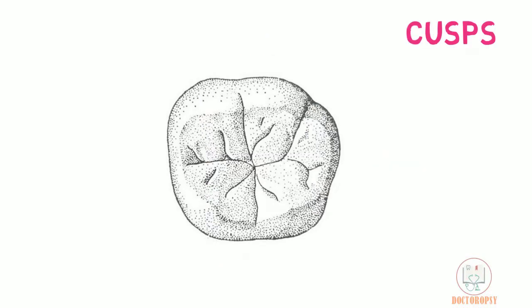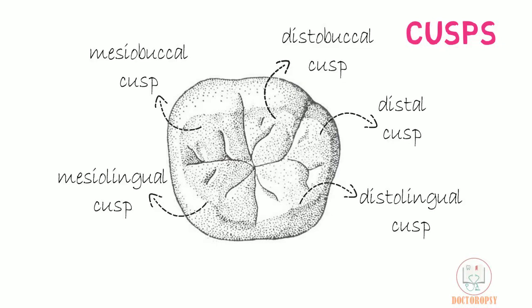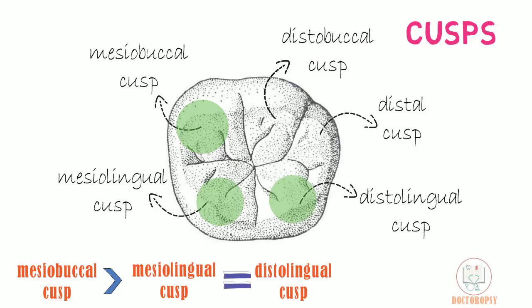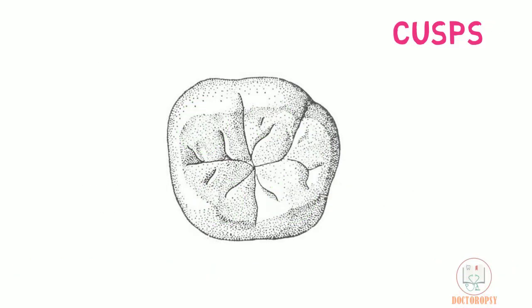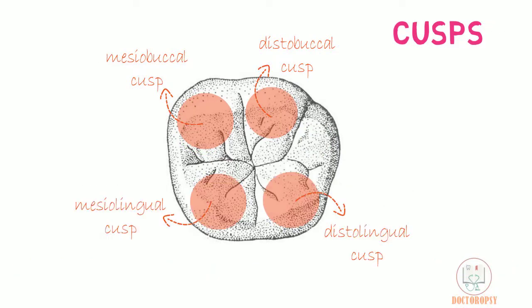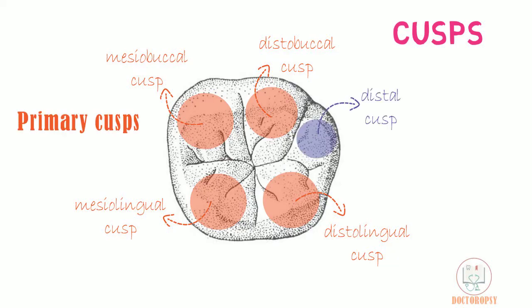From the occlusal aspect, all five cusps are seen. The meso-buccal cusp is the largest, followed by the meso-lingual cusp and disto-lingual cusp, which are almost of equal size. The disto-buccal cusp is smaller, and the smallest is the distal cusp. The two buccal cusps and two lingual cusps are considered the primary cusps, whereas the distal cusp is the secondary cusp.